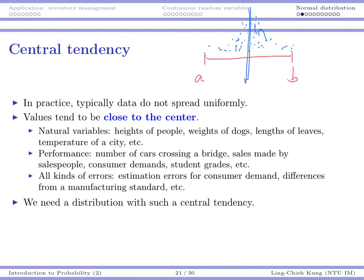Performance variables also have central tendency. If we are measuring the number of cars crossing a bridge, or the sales generated by multiple salespeople, or the consumer demands of multiple products in multiple places or multiple days, or the student grades from multiple students — typically they spread, but not uniformly. Most data locates around the center. The same applies to estimation errors or production errors.